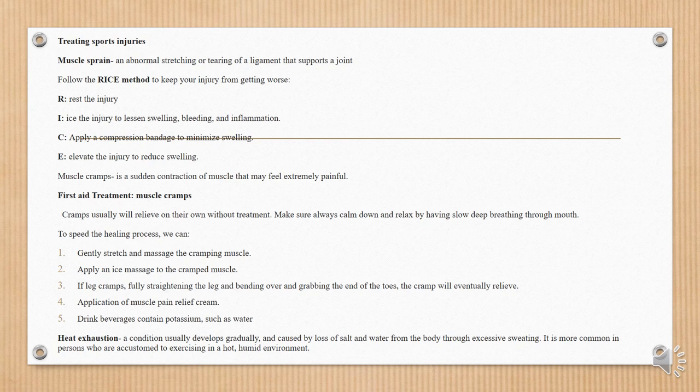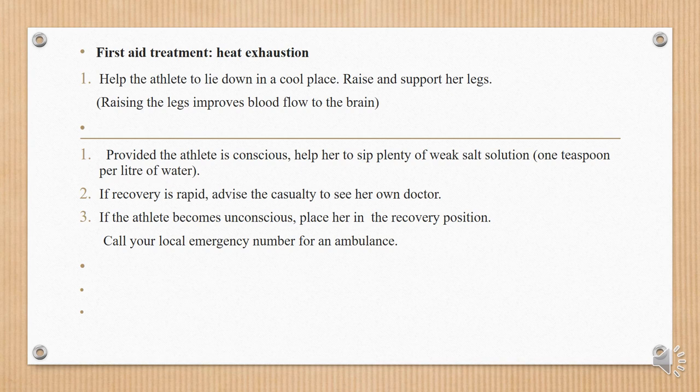Drink a beverage containing potassium, such as water. Heat exhaustion is a condition that usually develops gradually and is caused by loss of salt and water from the body through excessive sweating. It is more common in persons who are accustomed to exercise in a hot, humid environment. First aid treatment for heat exhaustion: help the athlete to lie down in a cool place; raise and support her legs — raising the legs improves blood flow to the brain; provided the athlete is conscious, help her sip plenty of weak salt solution (one teaspoon per liter of water); if recovery is rapid, advise the casualty to see her own doctor; if the athlete becomes unconscious, place her in the recovery position; call your local emergency number for an ambulance.